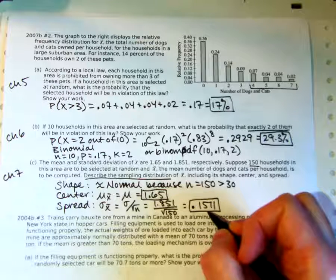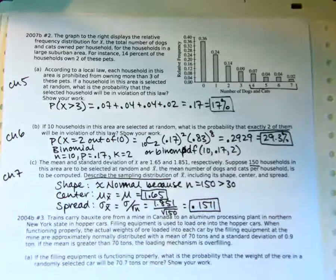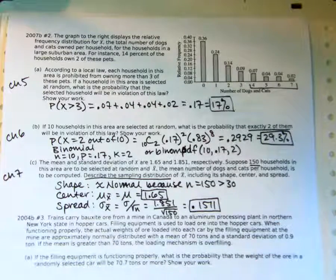That is the standard deviation of the number of pets. It's not a percent. All right. And that is it for 2007 B number two.